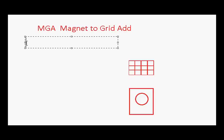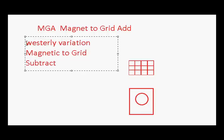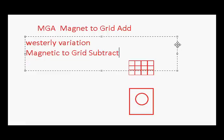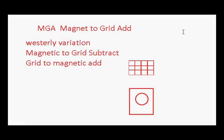If by some chance you're in Western Australia and have a westerly variation, you need to do the opposite. In westerly variation, it's magnetic to grid subtract, and grid to magnetic add. Under normal easterly variation it's magnetic to grid add, and grid to magnetic subtract — in westerly variation you simply reverse those rules.